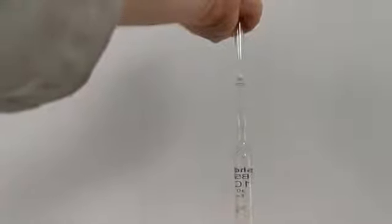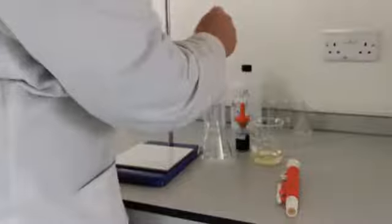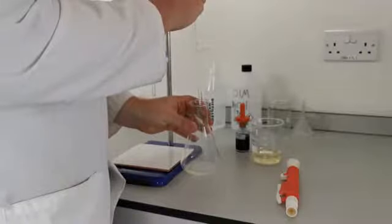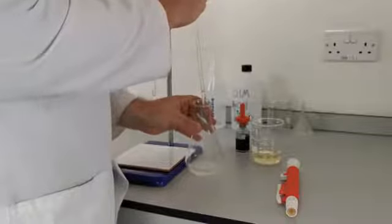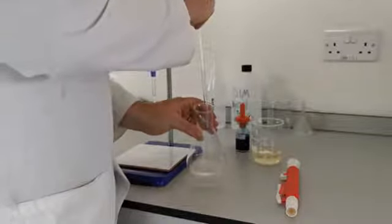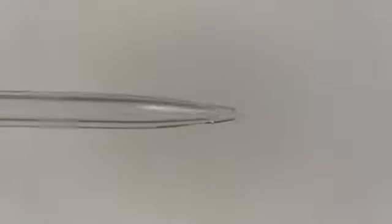Let's do this. Dispense your sample into the conical flask by simply allowing the pipette to drain into it. You'll notice that a very small amount of the sample will remain in the pipette. This is perfectly normal.